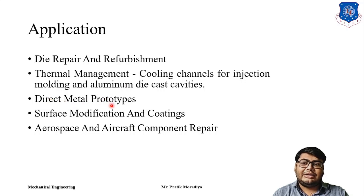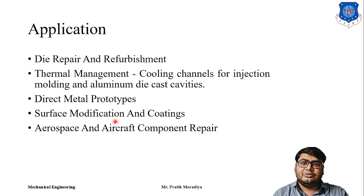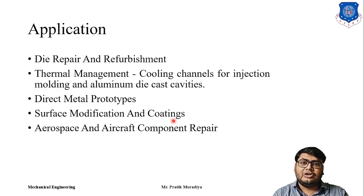You can produce metal prototypes directly, which is a great advantage — otherwise you would have to produce a polymer prototype and then cast the metal prototype, which is more time consuming. You can also do surface modification and provide coatings of special materials or special metals to a part. For example, you can produce a tool from normal steel and then apply a titanium coating using the DMD process, which drastically increases the hardness of the tool.